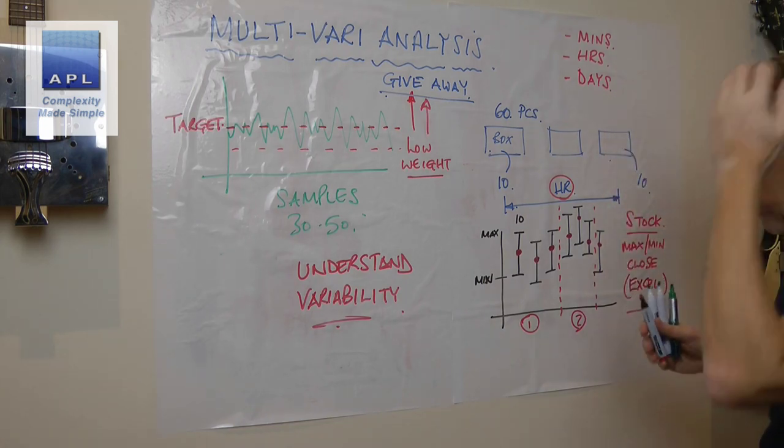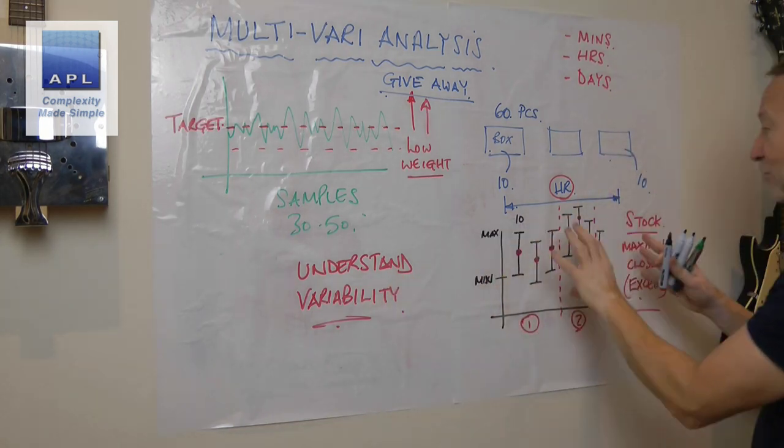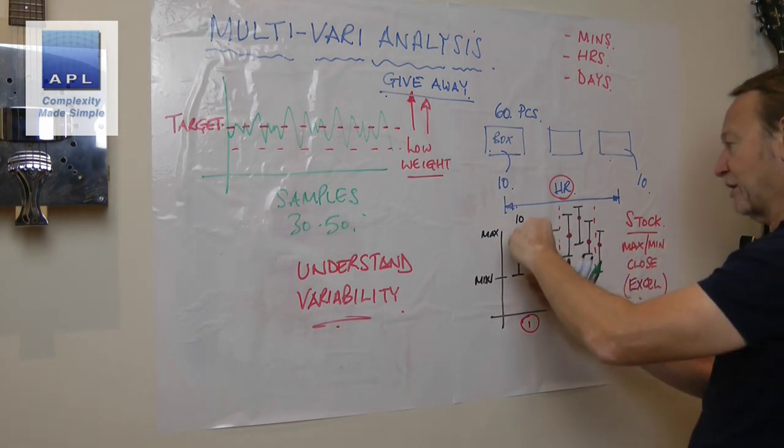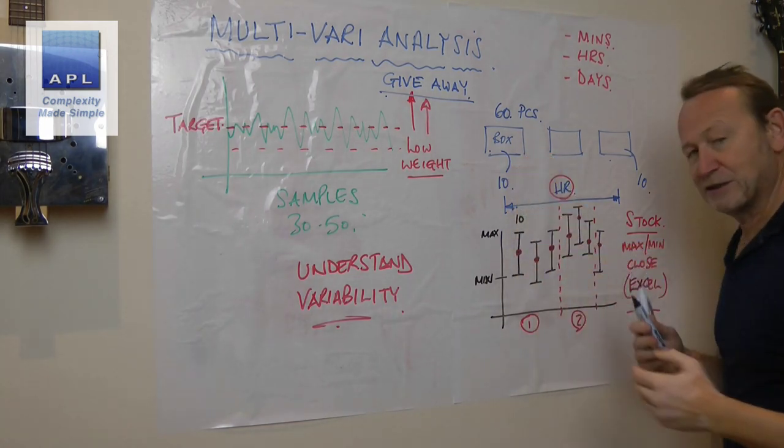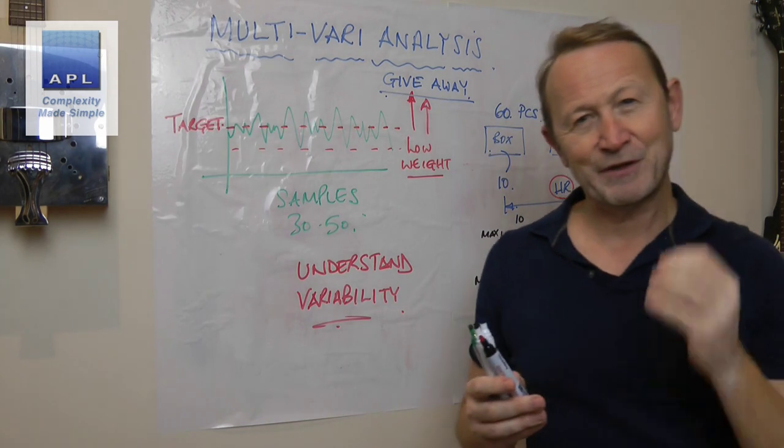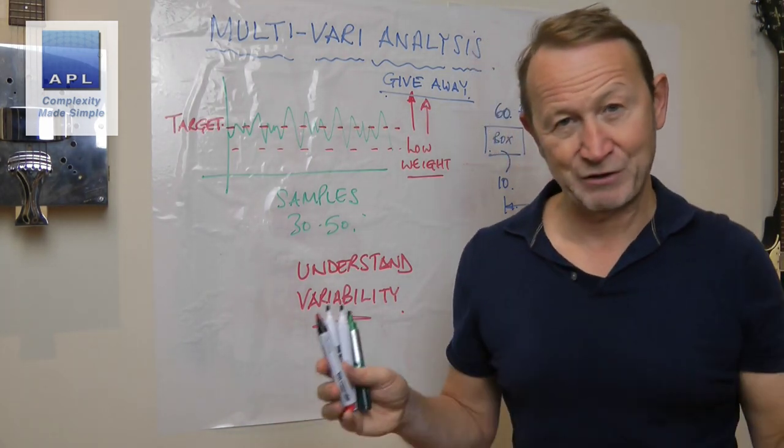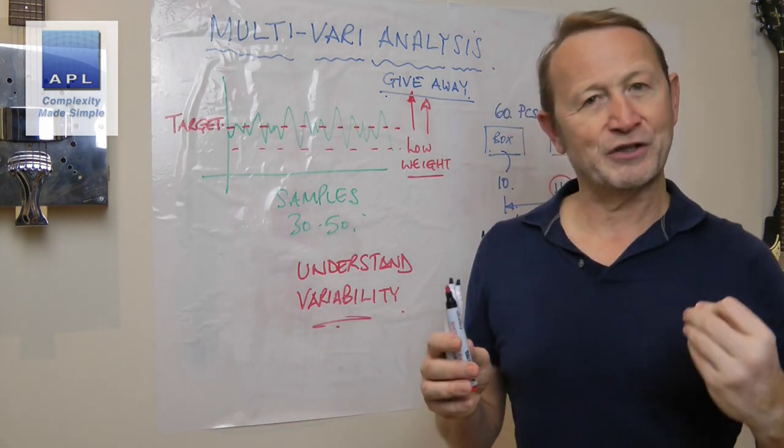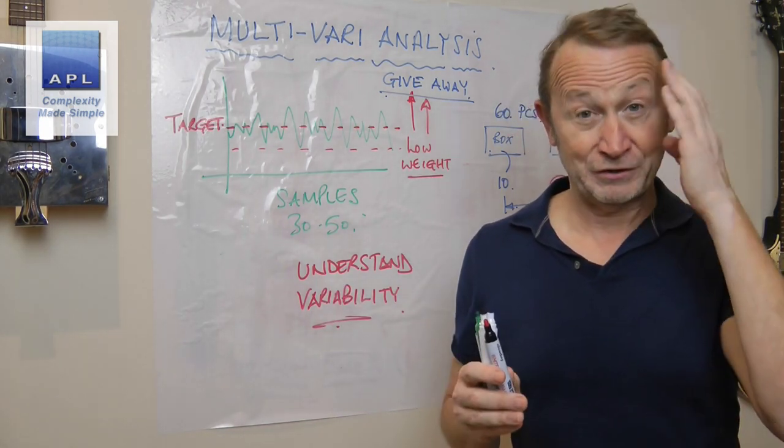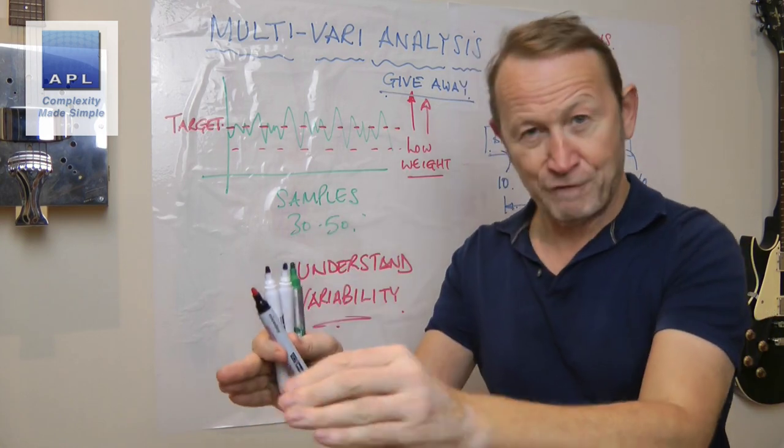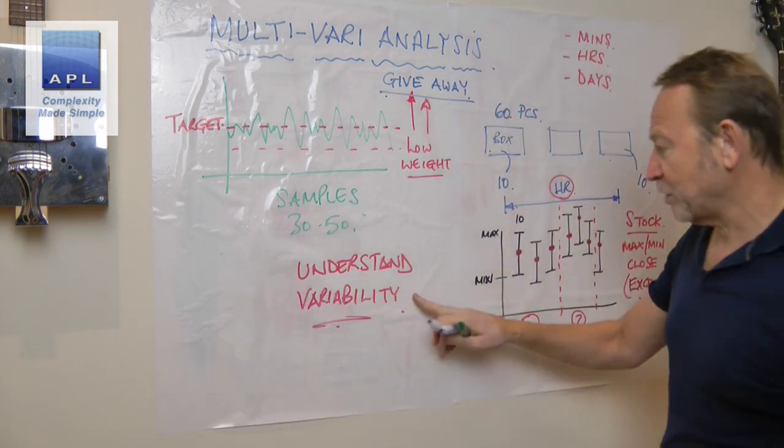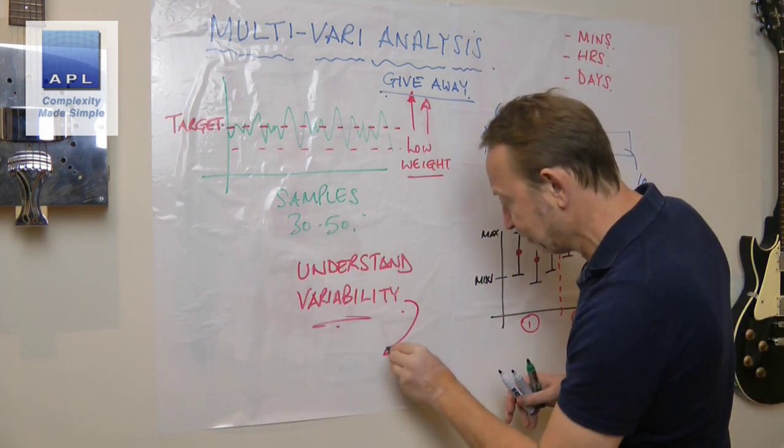The changes that happen within an hour. I'll be able to see changes that happen within minutes, changes that happen within hours, and of course because I can see day to day, I'll see changes that happen over days. And depending on what I see, if I see a lot of in-box variability, well that's telling me that my process is very poor.